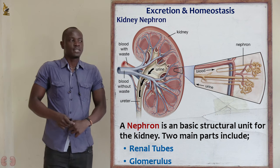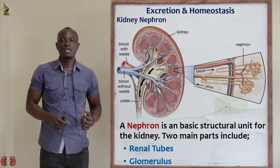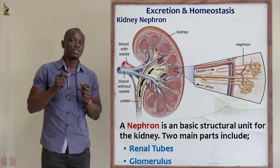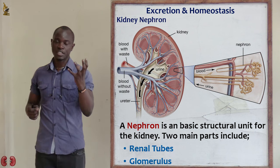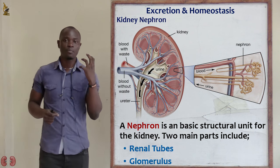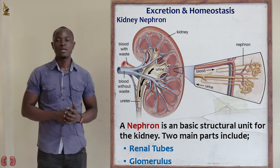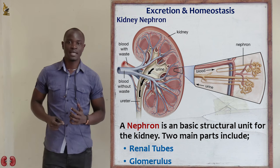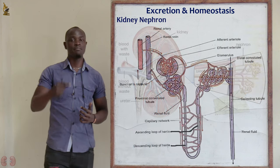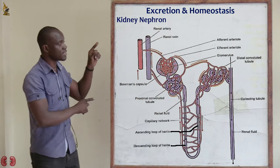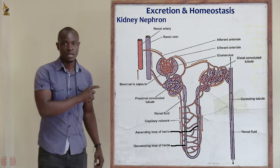Since we have two kidneys, each kidney has approximately 1.25 million nephrons. They are very tiny, microscopic, and very many. This is the nephron — the basic unit of the kidney.